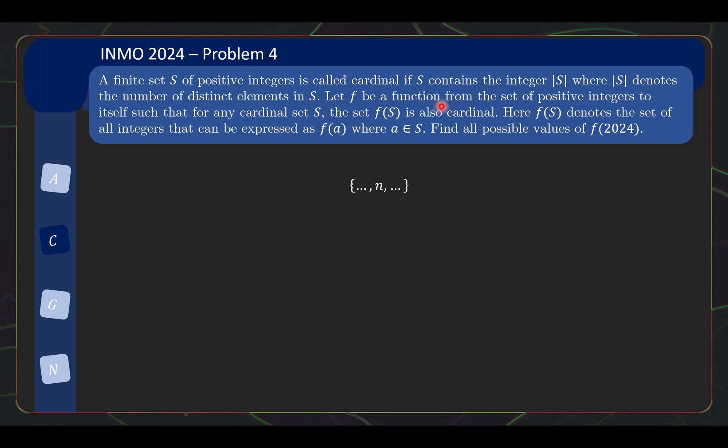So let F be a function from the set of positive integers to itself, such that for any cardinal set S, the set F(S) is also cardinal. Over here F(S) denotes the set of all integers that can be expressed as f(a) where a ∈ S. What does this sentence mean? So basically you have a cardinal set here. Let's say it is of size N and for it to be cardinal, the number N is also inside. That's the definition of cardinal. Then what we have is F(S). What is F(S)? F(S) you apply F to each of the elements and then you get another set. Remember for a set, you do not have repeated elements.